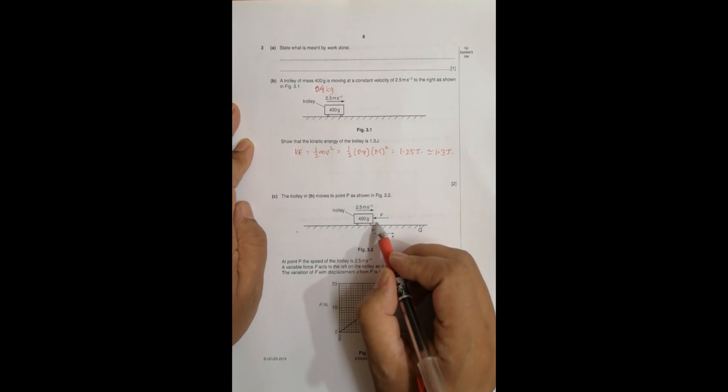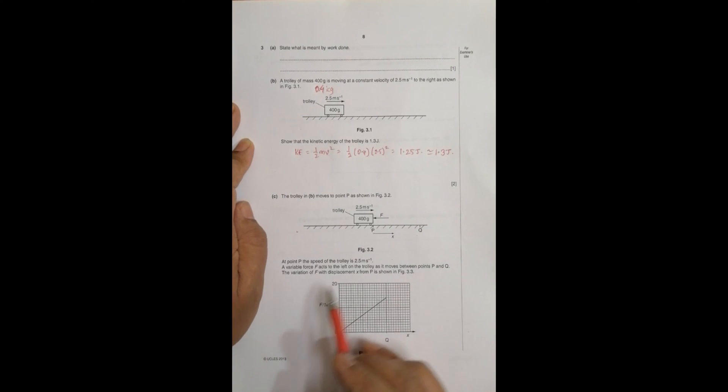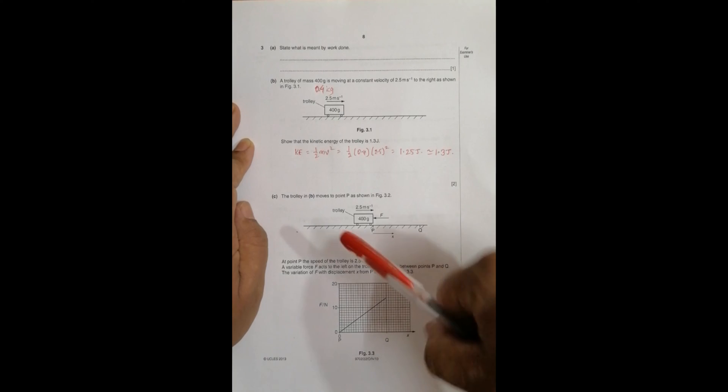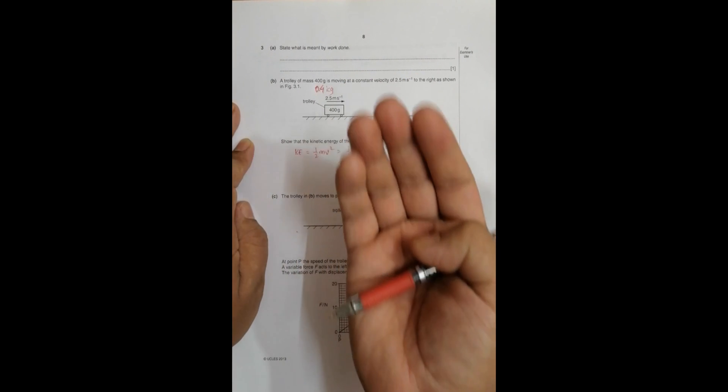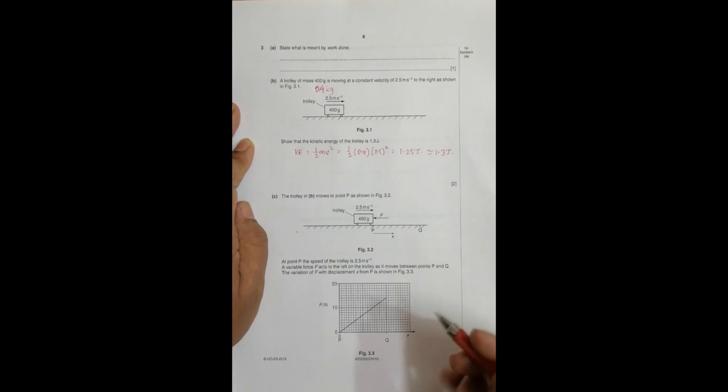A variable force F acts to the left on the trolley as it moves between points P and Q. The force goes on increasing. It is somewhat like when we twist the accelerator of bikes or when we apply brakes on vehicles. When we apply brakes, our feet will be pressing like this, so that means the force is increasing. Same case here.